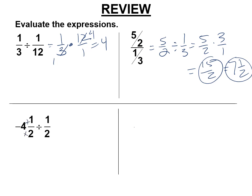You can't do anything with mixed numbers as far as multiplying and dividing. So we're going to get rid of that. That becomes negative 9 halves divided by 1 half, which is the same as negative 9 halves times 2. We can cancel the twos and we get negative 9. One negative in the problem.